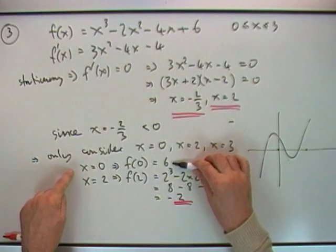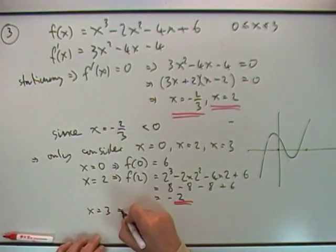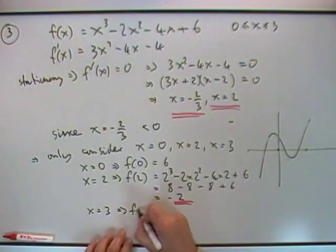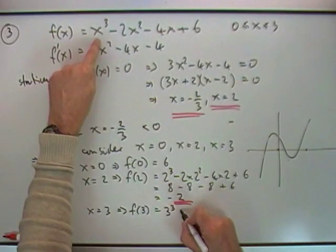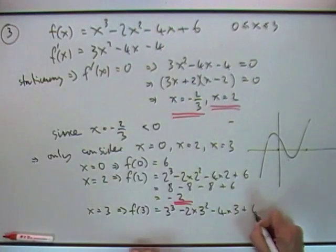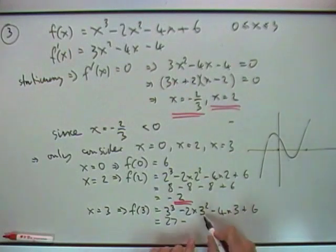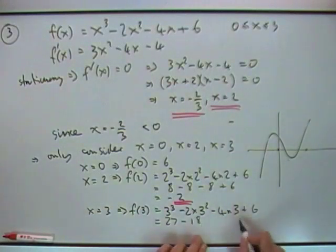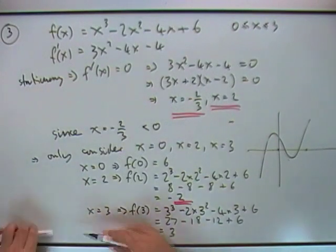So so far that's the winner for the maximum, that's the winner for the minimum. Still got to consider x equals 3 at the boundary. f(3), so that'll be 3³ - 2 times 3² - 4 times 3 + 6. So I've got 27 - 18 - 12 + 6, which is 3. So there's my 3 values.